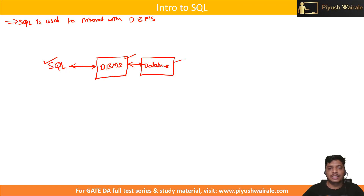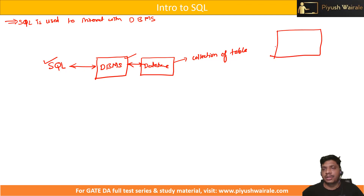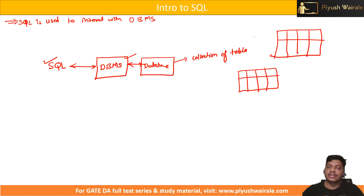What is a database? A database is basically a collection of tables. As we have discussed in the first lecture of this particular course, a database is just a collection of tables. We store data in a tabular format. We have a table, we have columns, we have rows. We store the data in a tabular format, just like a CSV file, but there is a relation between the various tables.